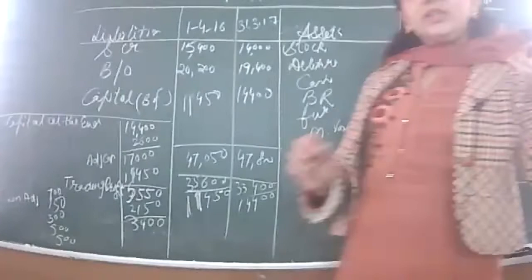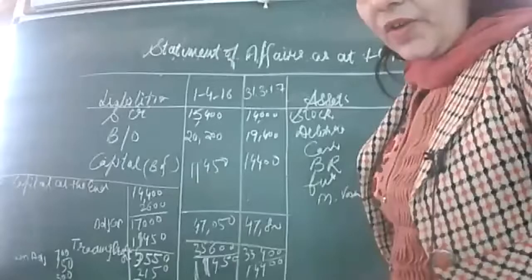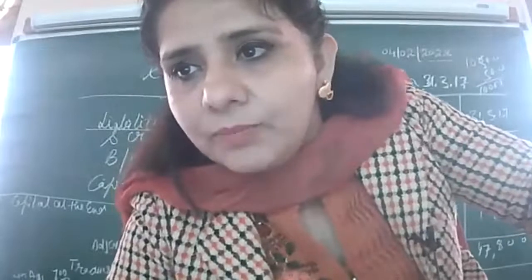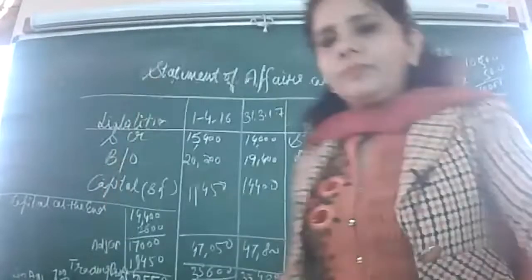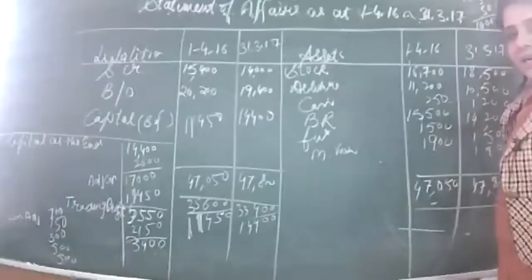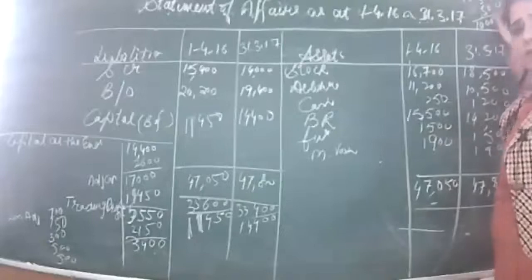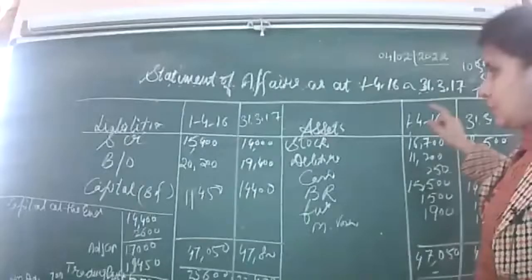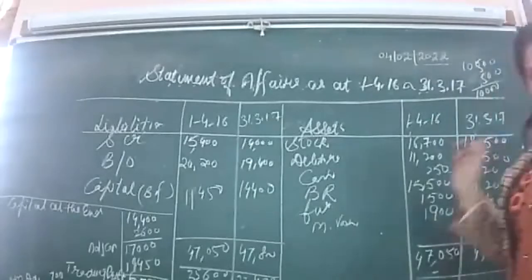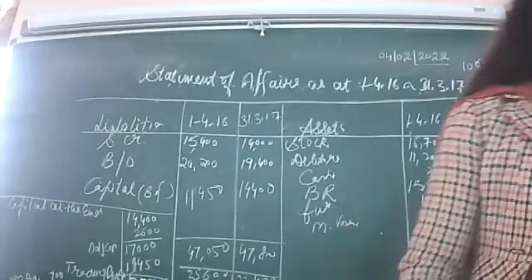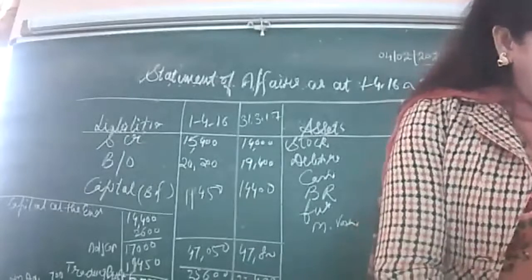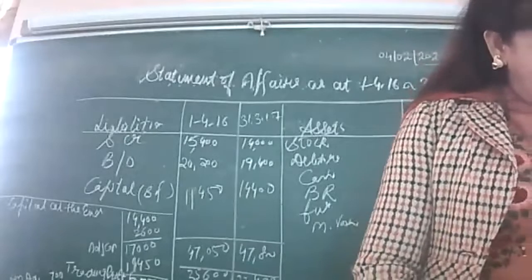We deducted depreciation, motor van write-off, bad debts, and calculated provision after deduction of bad debts from debtors. Out of 10,500, we deducted bad debts first, got 10,000, then created 5% provision which is 500. This was your follow-up fifth. The sixth question is solved in the book, I will go with sixth follow-up.